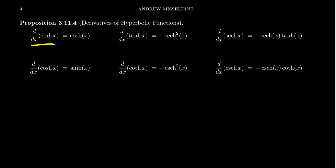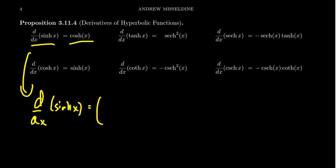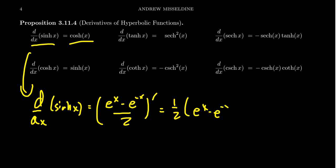consider the derivative of sinh. The derivative of sinh is equal to cosh. This is actually a fairly simple argument. If you want to take the derivative of sinh, we just have to apply its definition: we get (e^x minus e^{-x}) over 2, then take the derivative. We can factor out the one half, so we get the derivative of (e^x minus e^{-x}). Taking the derivatives separately, the derivative of e^x is itself, and the derivative of e^{-x} by the chain rule equals negative e^{-x}.